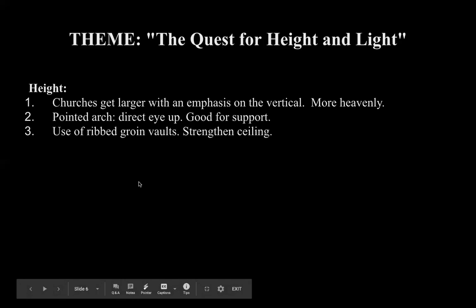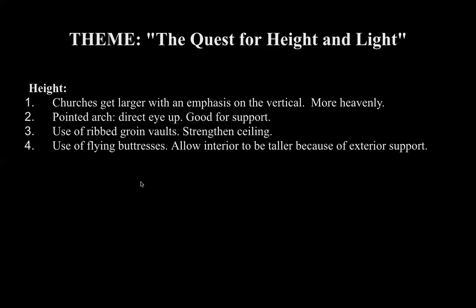Some ceilings were stone as well. There's also the introduction of flying buttresses — exterior supports — that allow interior structures to become even more tall. The flying buttresses basically direct the weight from the top of the church to the ground. And in terms of lightness, we notice there are a lot thinner details.